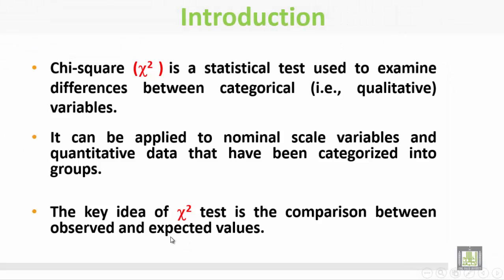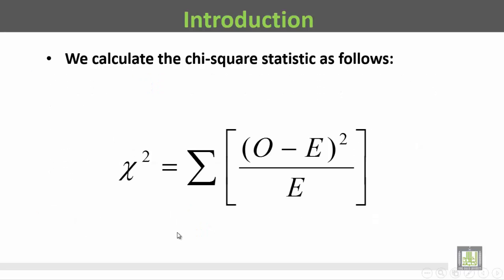Observed means the values that are observed or recorded, and expected means the anticipated values. We calculate the chi-square test as follows: the chi-square is equal to the summation of the observed minus expected squared divided by the expected.